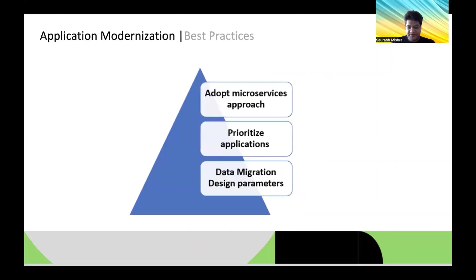These are the best practices: first, adopt and re-architect to microservices distributed applications. Second, prioritize which applications to modernize first — don't think about modernizing everything at once; figure out which are the most critical for your migration program. Third, design a data migration plan — for any migration process, define and design a complete picture of the process for those applications.